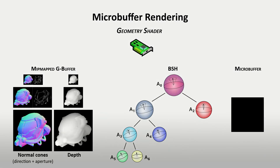During the real-time rendering, the proposed PBGI algorithm computes a multi-resolution G-buffer with cones of normals, to speed up the visit of the BSH for each pixel of the viewport using the geometry shader. At each iteration, given a pair made by a pixel in the G-buffer and a node in the BSH, the algorithm can follow three different paths.